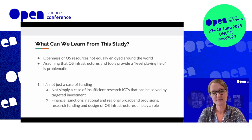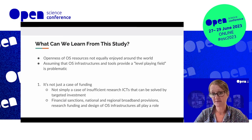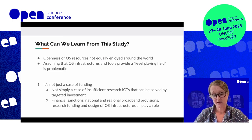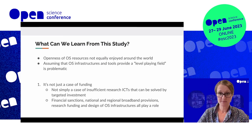So what can we learn from this study? Unfortunately, what the study definitely demonstrates is that openness of open science resources is not equally enjoyed around the world, and assuming that open science infrastructures and tools provide a level playing field for researchers around the world is extremely problematic. It becomes very apparent from this that it's not just a case of funding — the digital divide is not simply a case that researchers have insufficient information and communication technologies that can be solved by targeted investments. Instead, it is obvious that financial sanctions, national and regional broadband provisions, research funding, and also the design of the open science infrastructures all play a role in how researchers are able to access, engage, and utilize open science resources online.